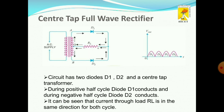Now we will see the center tap full wave rectifier. In a center tap full wave rectifier, we use a transformer, two diodes, and one RL load. We use a 230 volt, 50 hertz AC supply. When we give the supply to the transformer during the positive half cycle, point A is positive with respect to point B, so A is more positive than B. The current path will be point A, D1, RL, and O.